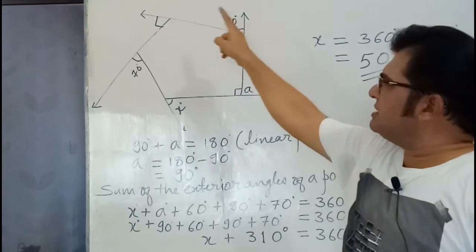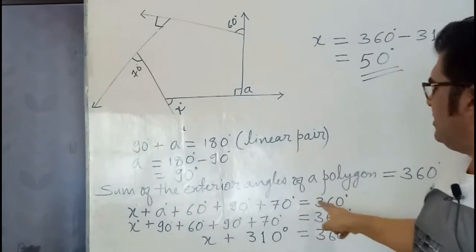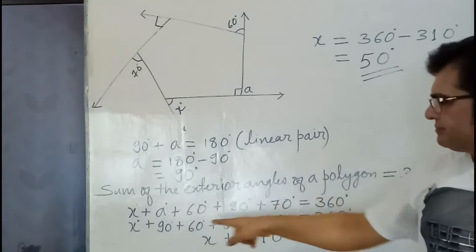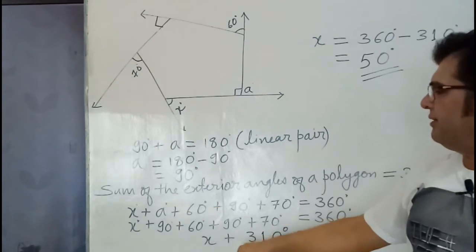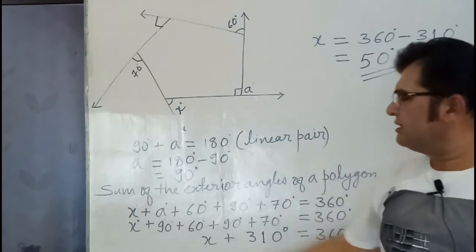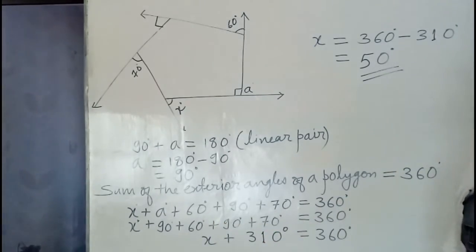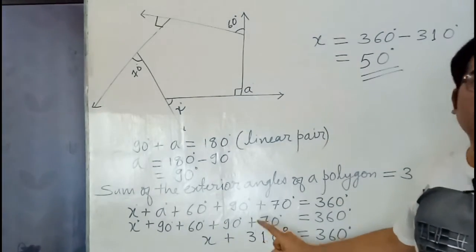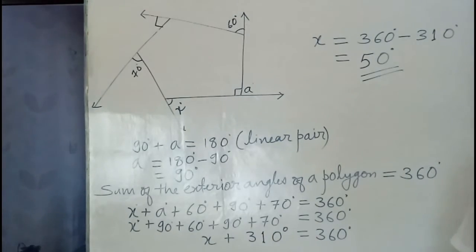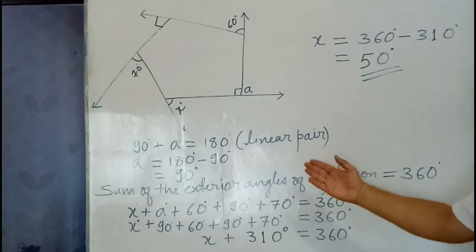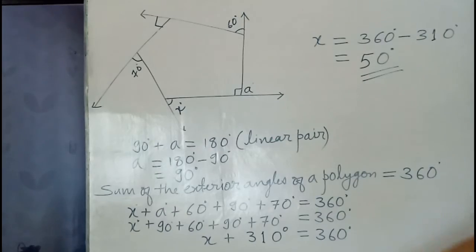X plus A plus 60 plus 90 plus 70 equals 360 degrees. Then we put that value of A, which is 90, so that becomes 310. X plus 310 equals 360. Then X equals 360 minus 310 by transposing, so we get 50.